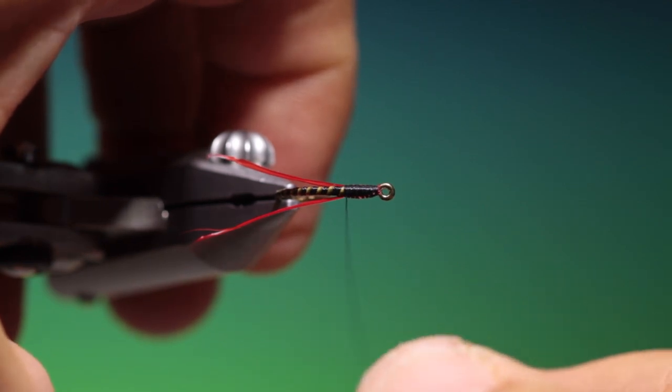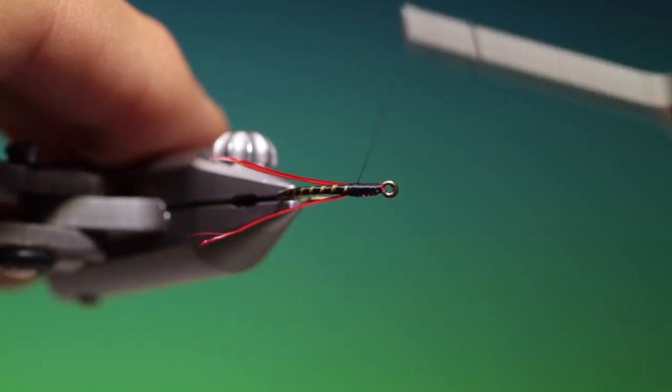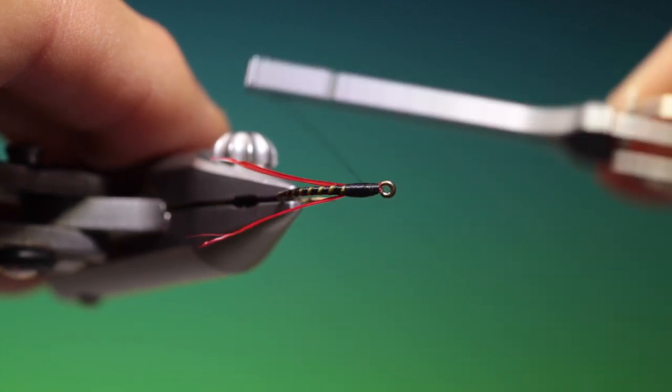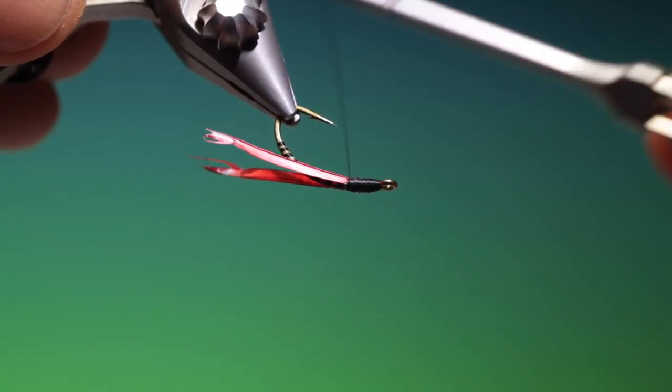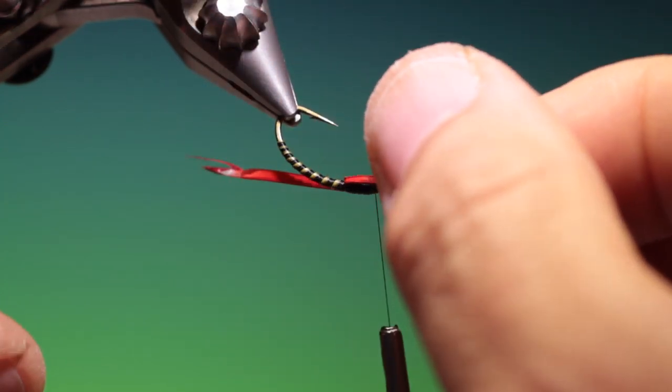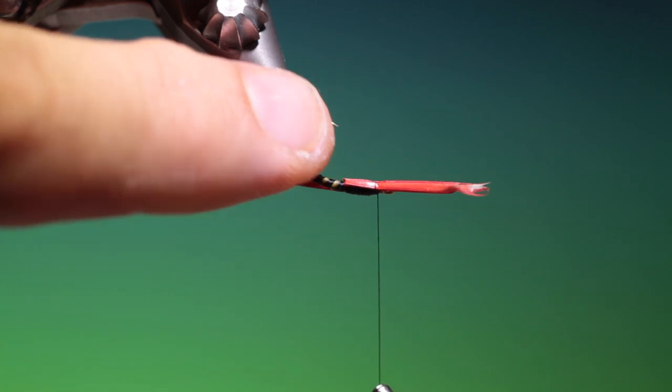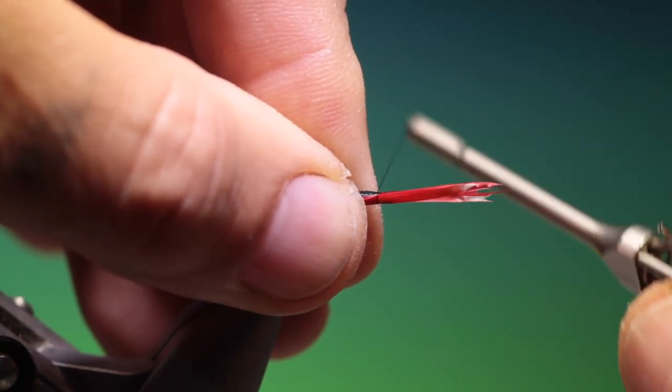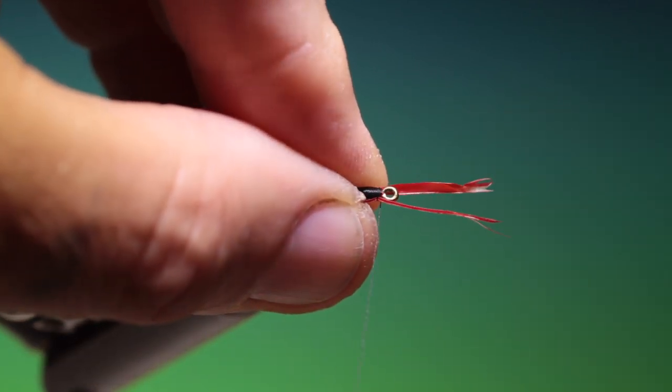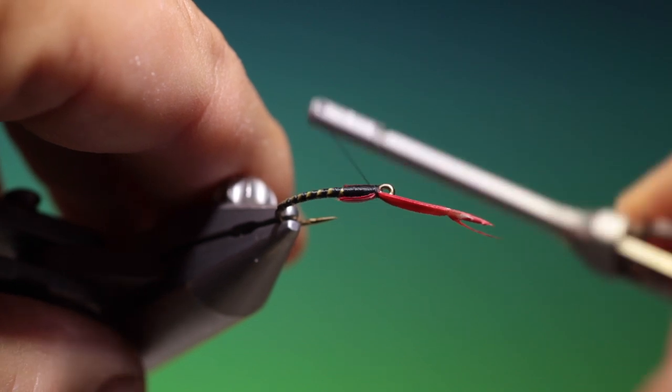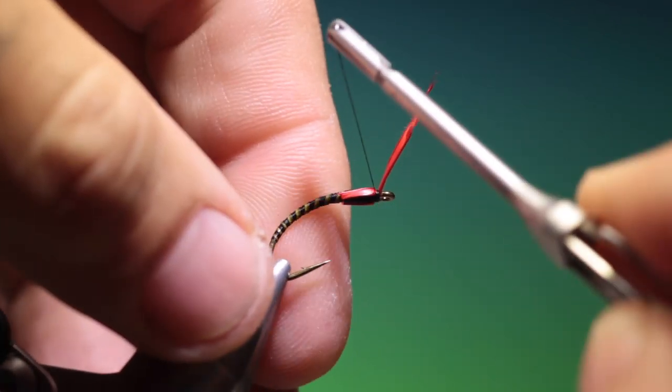Make sure we've got those, yeah. Flatten our thread again and just build up the thorax so it looks a little swollen. Check that you've covered everything. There we go. Fold these over, make sure they're right. Keep tension on your bobbin; we can tear them off like that. Good.